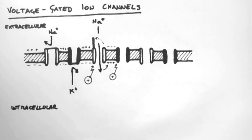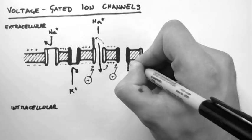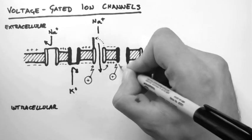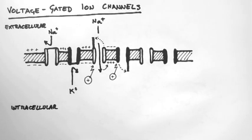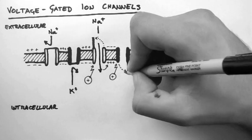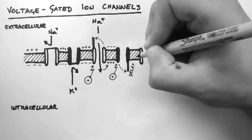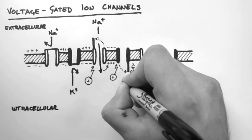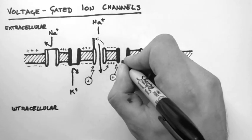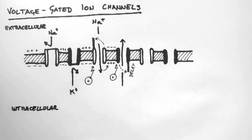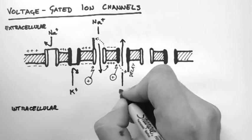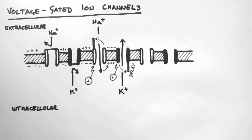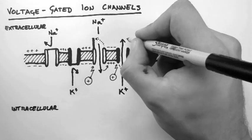Now remember that we also applied a positive charge to the voltage-gated potassium channel. Well this also flips open, but there is a delay before this happens. But when it does happen, the potassium rushes out, removing positive charges from the cell and placing them on the other side of the membrane.